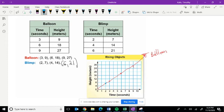Our second ordered pair is 4, 14. And our third ordered pair is 6 and 21. And we're going to start from 0, 0. And that is the blimp.